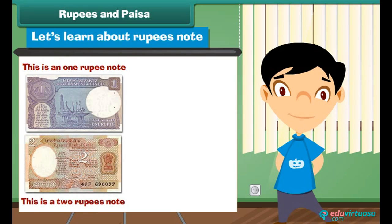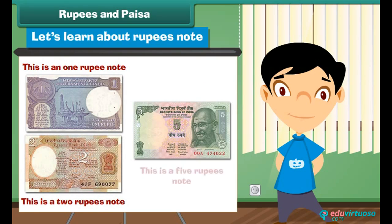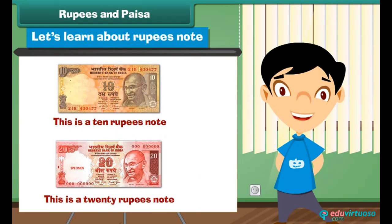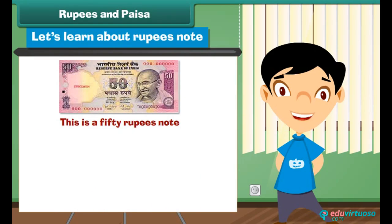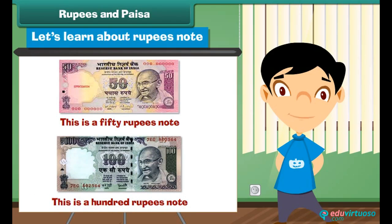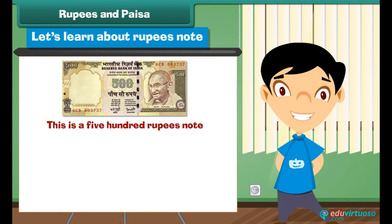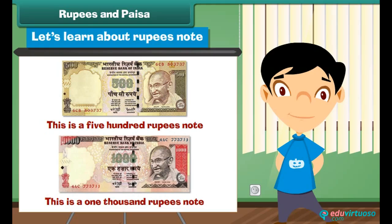This is a 5 rupees coin. This is a 10 rupees note. This is a 20 rupees note. This is a 50 rupees note. This is a 100 rupees note. This is a 500 rupees note. And this is a 1,000 rupees note.